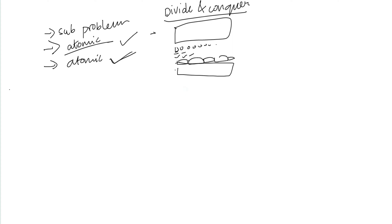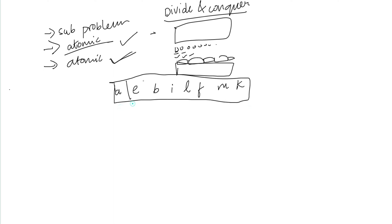To illustrate with an example, we have eight alphabets completely unordered: A, E, B, I, L, F, M, K. The goal is to sort these alphabets.